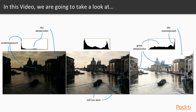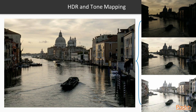High dynamic range imaging, or HDR imaging, works with images that use more than 8 bits per channel, usually 32-bit float values, allowing a much wider dynamic range. The most common approach is to use multiple photographs of the scene taken with different exposure values. After the combined HDR image is generated, it has to be converted back to 8 bits per channel to view it on most regular displays. This process is called tone mapping.